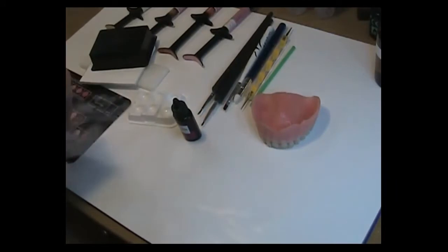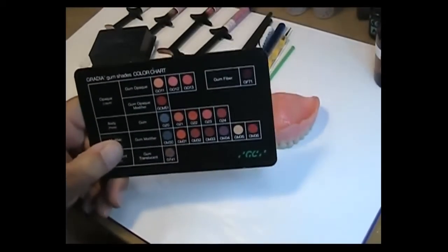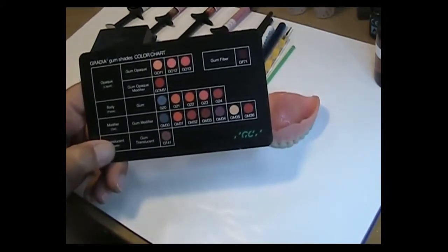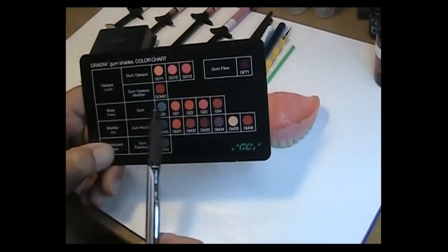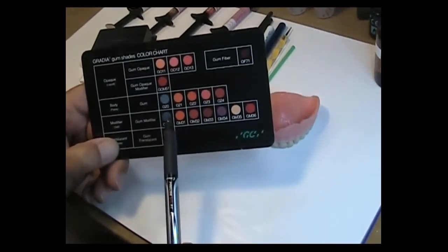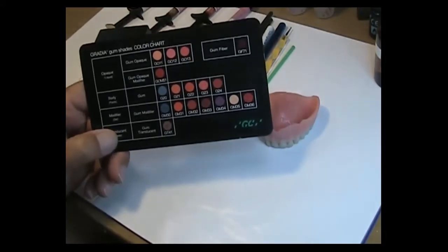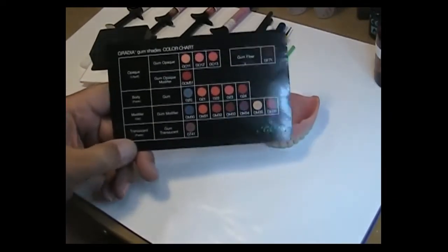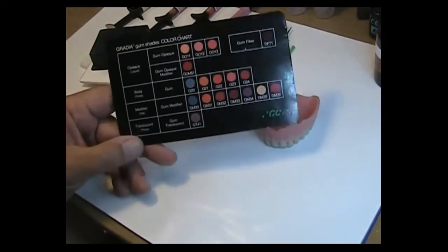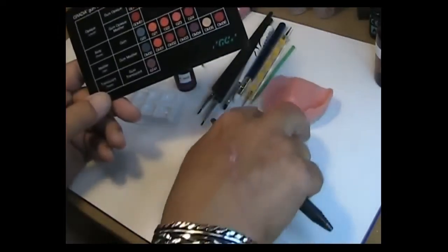You have to have composite primer. In the Gradia kits you'll see a card which will identify the products that come in the Gradia gum shade line. My technique for colorization of denture bases has nothing to do with the bodies, G20 through G24. I don't build up with a body. I use the gum modifiers, the GM numbers: 31, 32, 33, 34, 35, and 36, and then there's a translucent paste which I call a carrier.